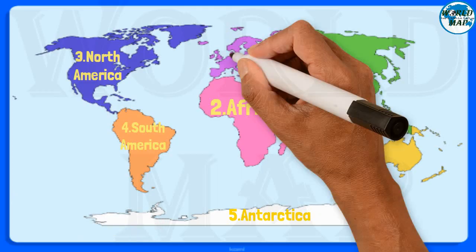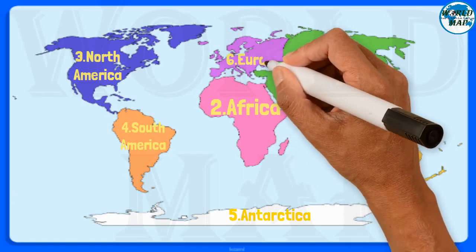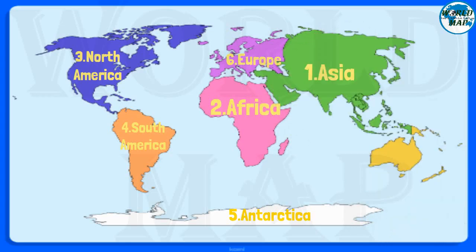Number 6: Europe. It is the sixth largest continent in the world and the third most populous. Europe and Asia are sometimes called Eurasia, as they are physically connected but are considered separate continents due to linguistic and cultural differences. Europe comprises 48 countries.